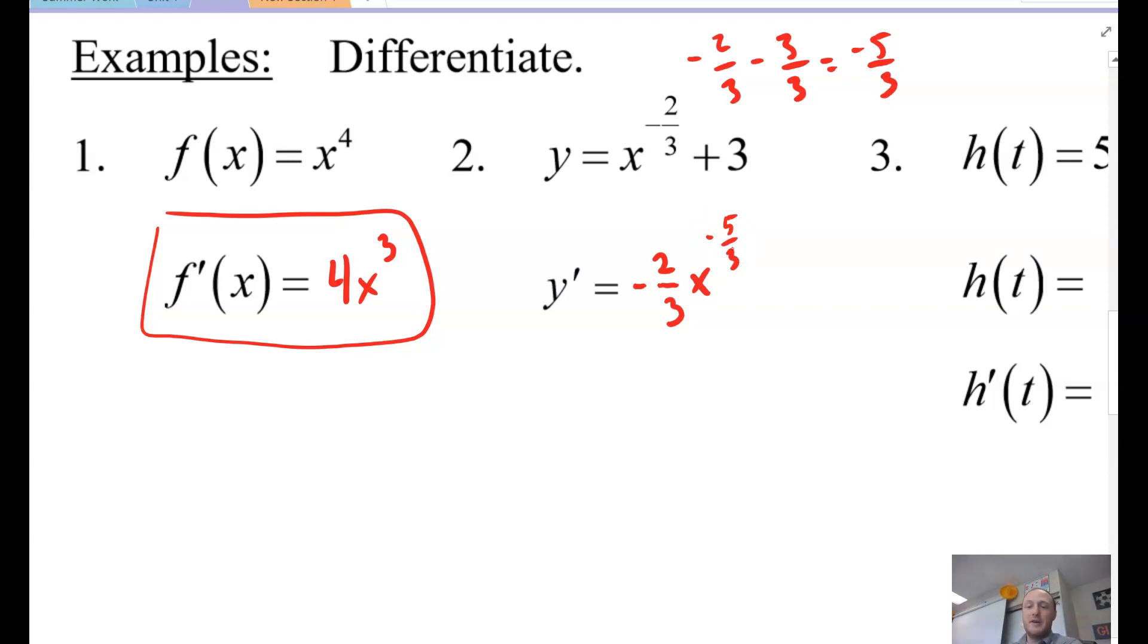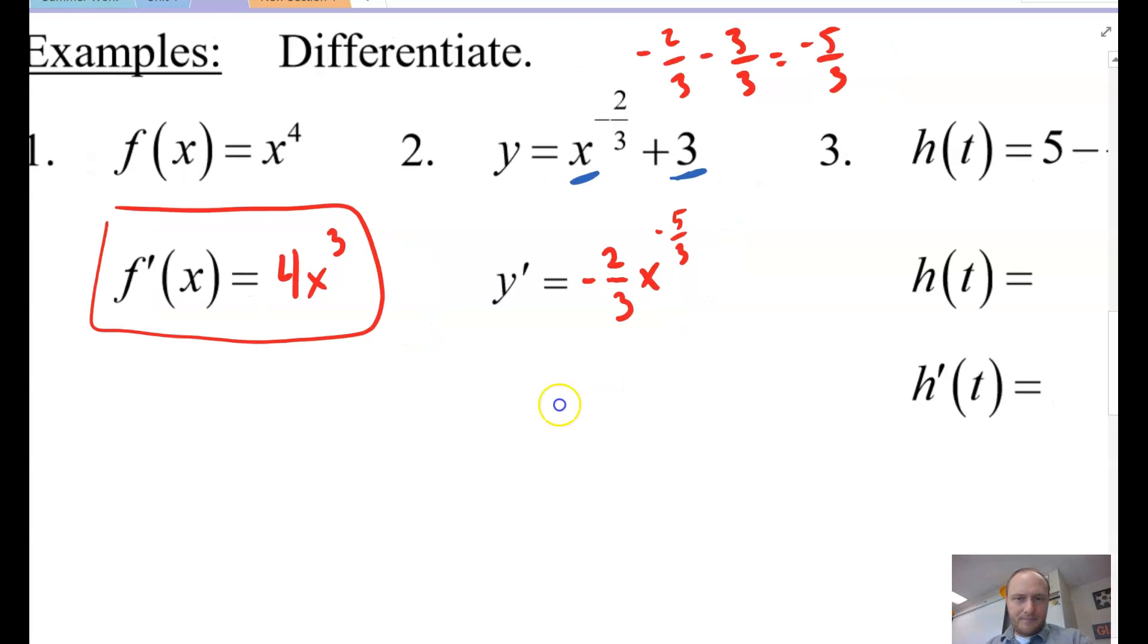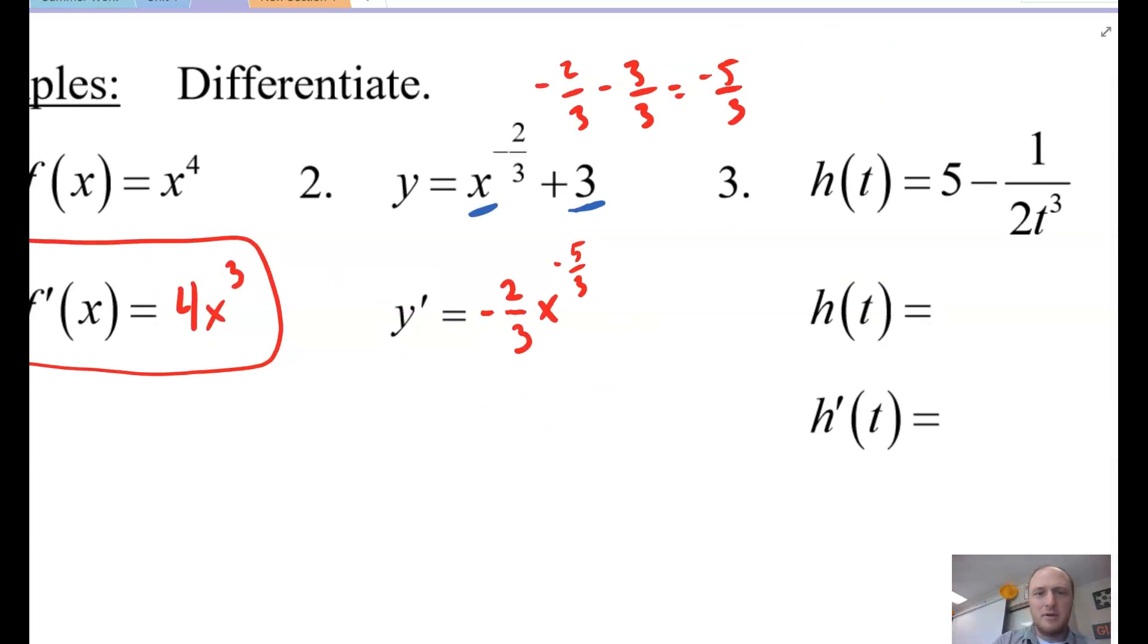And then here is the sum rule along with the constant rule. If I want to take the derivative of this sum, this term plus this term, I take the derivative of both of them. Well, I found the derivative of the first piece, but the second piece is just a constant. It's 3. So when you take the derivative of a constant, the answer is always 0. So there's example two.